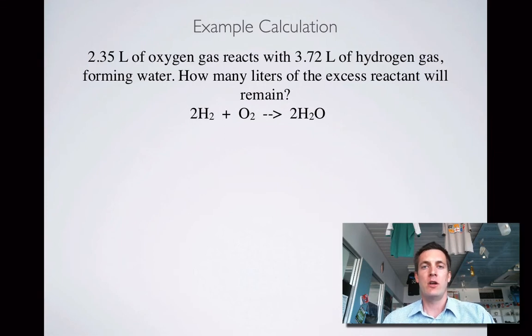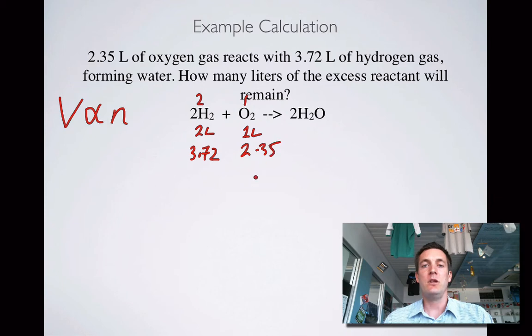Here comes another one. This one uses the fact that the volume is proportional to the number of moles. Why does this use that? Well, we're told the volumes of two gases and we're given a mole ratio from an equation. But we can remember that if you're doing all this at the same conditions, then if you know the mole ratio, then you know the volume ratio. This means that every two liters of hydrogen will need one liter of oxygen.